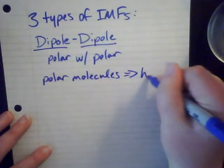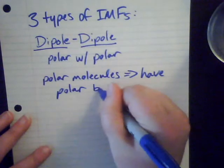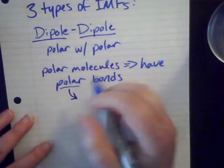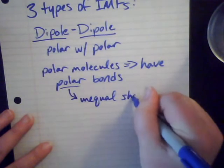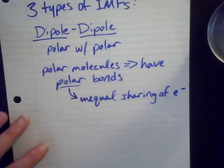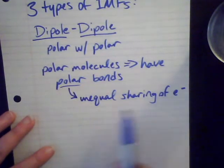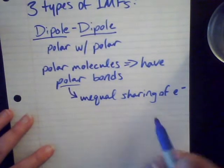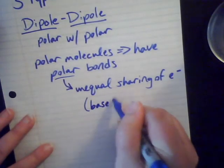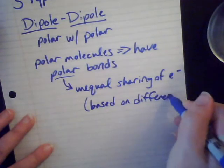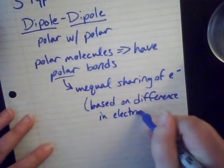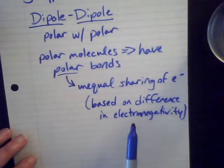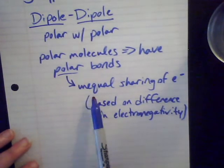Polar molecules have polar bonds. Polar bonds are an unequal sharing of electrons — polar bears don't like to share. So we have a covalent bond that's definitely sharing electrons, but one atom is pulling on those electrons more than the other. That's because of the differential in the electronegativities between the two elements. The difference in electronegativities allows for an unequal sharing of electrons, which means that the bond is polar.